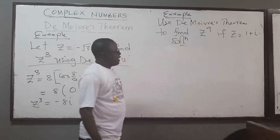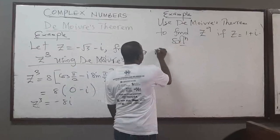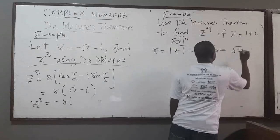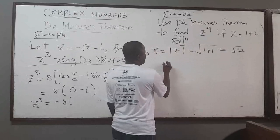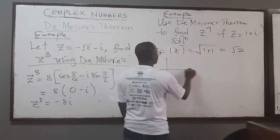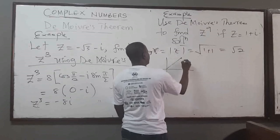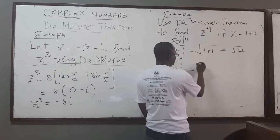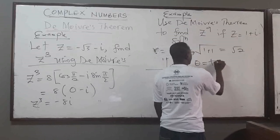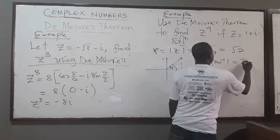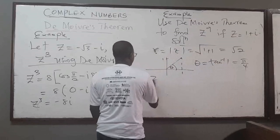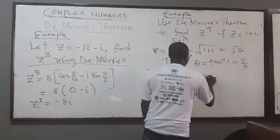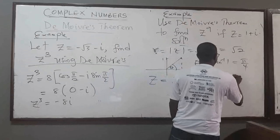Write this in polar form. R is the absolute value of z, which is √(1² + 1²) = √2. The argument: both x and y are 1, so the point is in the first quadrant with angle π/4. Therefore, I can write z as √2·(cos(π/4) + i·sin(π/4)).